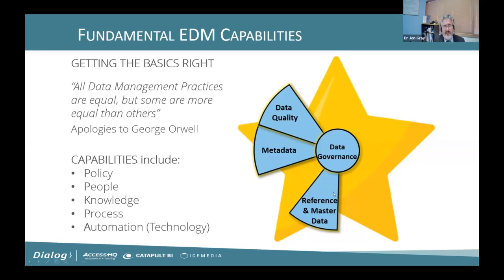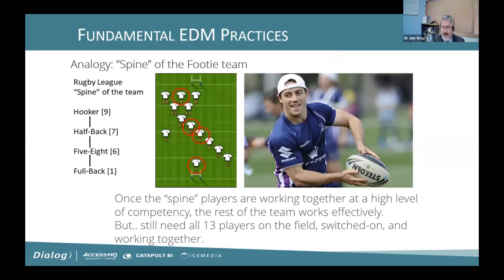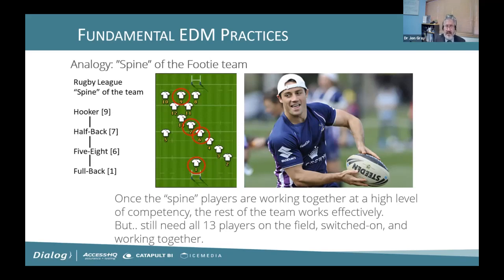This idea of some capabilities being more important than others — I use an analogy from Rugby League. In Rugby League, there is this coaching philosophy of the spine of the footy team. It says: it's a team sport, you need all 13 players on the field working together. However, within those 13 players, there are certain positions that are more critical to success — the hooker, half-back, five-eighth, and full-back. If the spine players are performing really well, that has a beneficial effect across the rest of the players. You can't just play with four players, you need all 13.